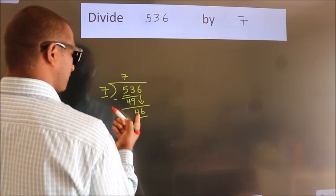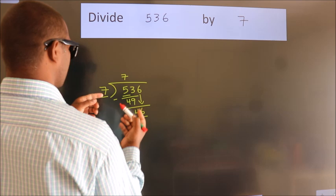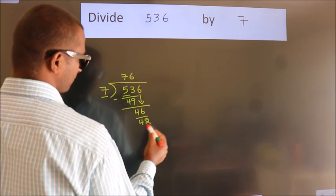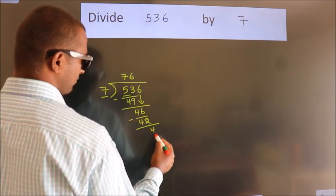So 46. A number close to 46 in the 7 table is 7 times 6 equals 42. Now we should subtract. We get 4.